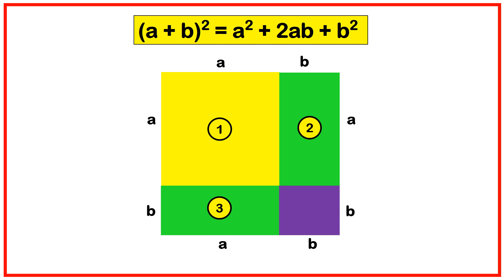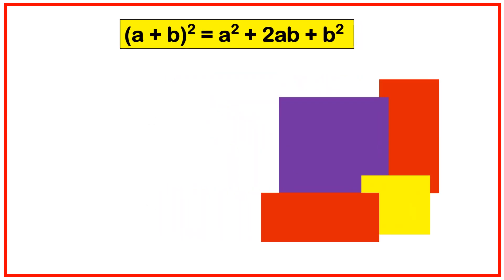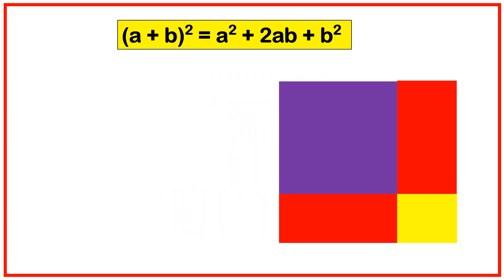The first part is a square with side a by a. The area of this square is side into side, that is a into a, which is equal to a square. The second part is a rectangle with dimensions b by a, so its area is a into b, that is ab.